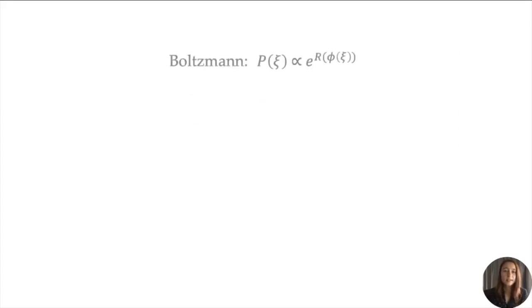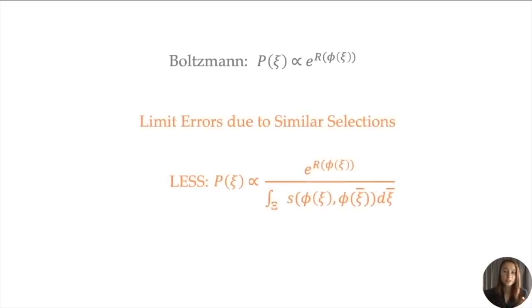With Boltzmann, the likelihood of choosing a trajectory is proportional to its exponential reward against the alternatives, with no regard for how similar to one another these alternatives even are. We propose that we limit errors due to similar selections using our LESS formula. We introduce a similarity score between features of the trajectories. Thus, each exponential reward is divided by the total similarity between the trajectory and its alternatives. Let's now tease out the difference that LESS makes in a more concrete example.